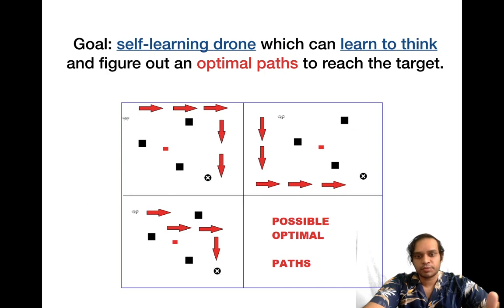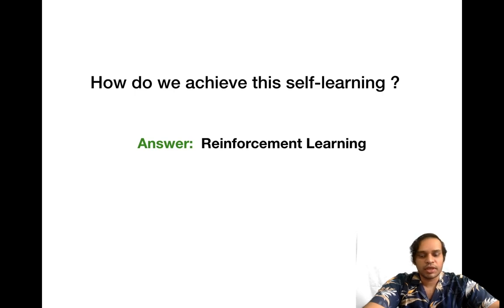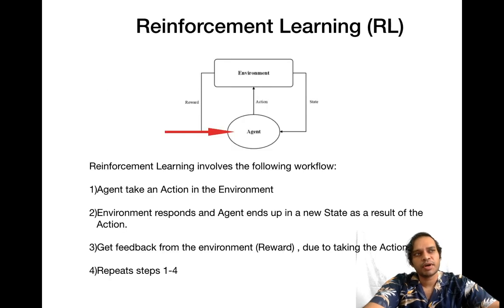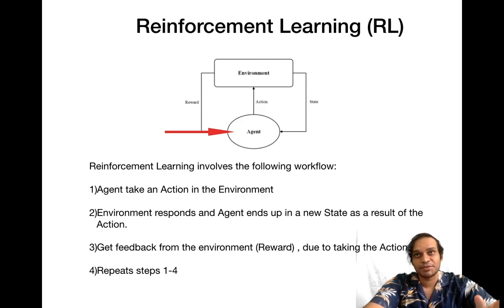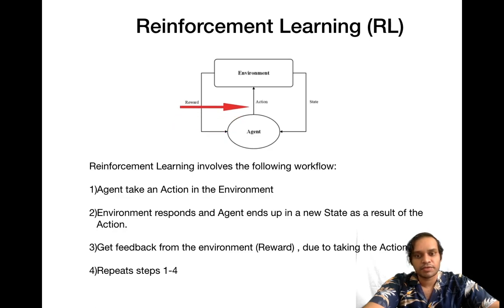To achieve this self-learning, we make use of a technique called reinforcement learning. To understand it we need to know about some of its moving parts. Reinforcement learning has the following workflow: first you've got the drone, or the artificial intelligence. The first thing it does is take an action, and when it takes an action in the world where it's located, it will get a response from the world, which we call the environment.